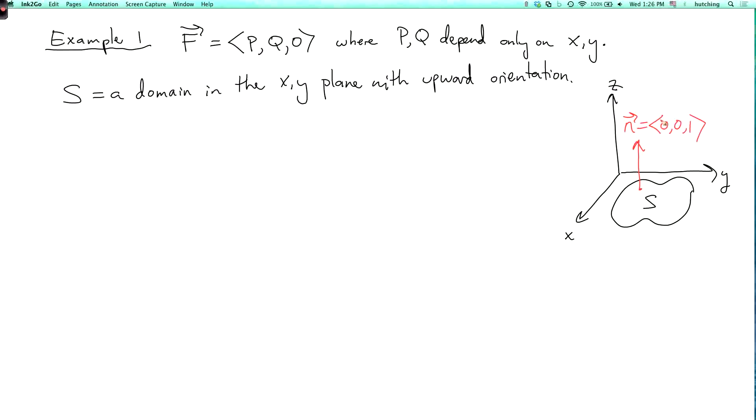The other alternative would be 0, 0, minus 1, that would be the downward orientation. And then we can see that the boundary curve is oriented like this. So that's what positively oriented means. This agrees with the previous definition of positively oriented that we gave for curves in the plane, which are boundaries of regions in the plane.